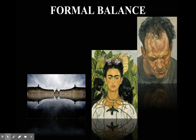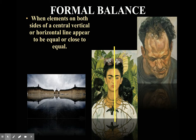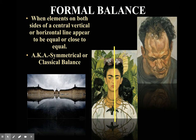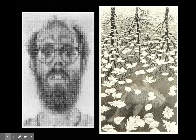The first term we're going to look at is formal balance. Formal balance is easy to see and easy to recognize. It's basically when elements on both sides of a central vertical or horizontal line appear to be equal or close to equal. Sometimes you might hear symmetrical or classical balance — these are the same as formal balance.